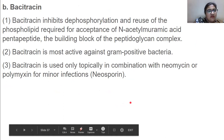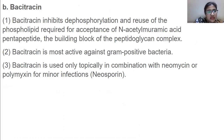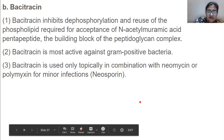Bacitracin inhibits dephosphorylation and reuse of the phospholipid required for acceptance of N-acetylmuramic acid pentapeptide, blocking the building block of the peptidoglycan complex. Bacitracin is most active against gram-positive bacteria and is used only topically in combination with neomycin or polymyxin for minor infections.